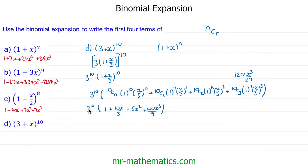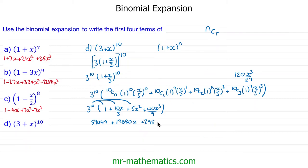Now expanding out 3 to the 10, we get: 59,049 plus 196,830x, plus 295,245x², and plus 262,440x³. So these are the first four terms of this expansion.